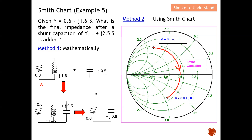I need to find the final impedance of these three in parallel. Comparing magnitudes: the capacitor at 2.5 is more significant than the inductor at 1.6, so the final outcome will have a capacitive effect. The magnitude will be 2.5 minus 1.6, which equals 0.9. So the final admittance is 0.6 + j0.9. To find the final impedance, compute 1 over (0.6 + j0.9) to obtain the combined impedance of these three parallel elements.